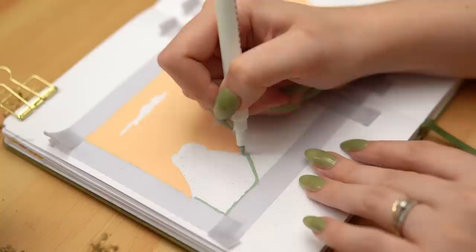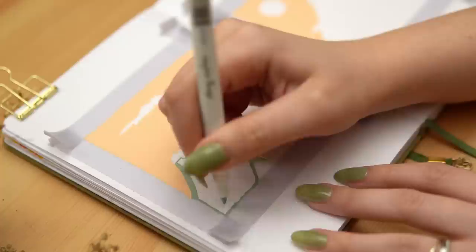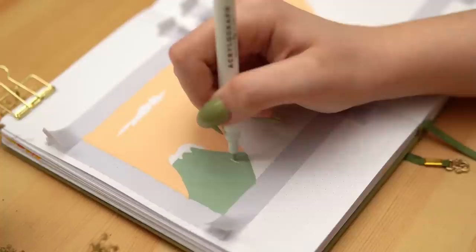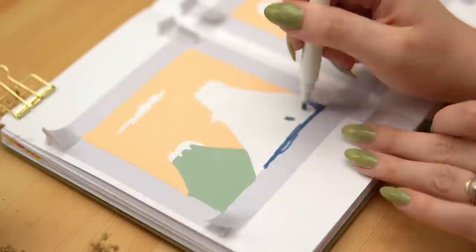This soft sage green I'm using right now is one of the colors from Amanda Rach Lee's collaboration with Archer and Olive. She created a whole set of Acrylographs and they're such interesting unique colors that I was really drawn to, so I wanted to make sure to use a couple in this video.